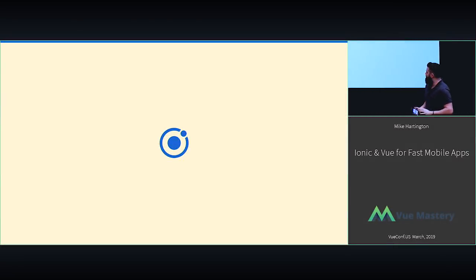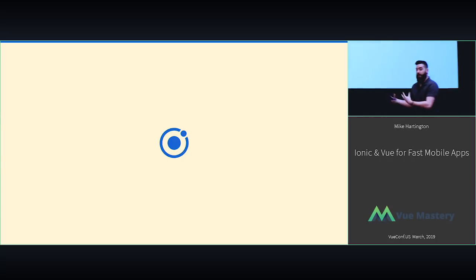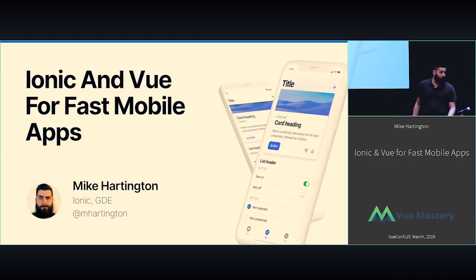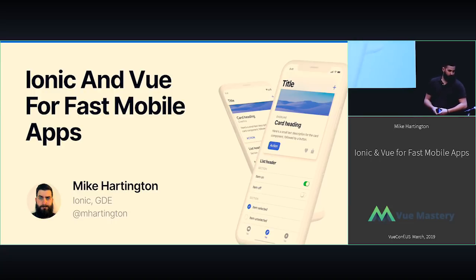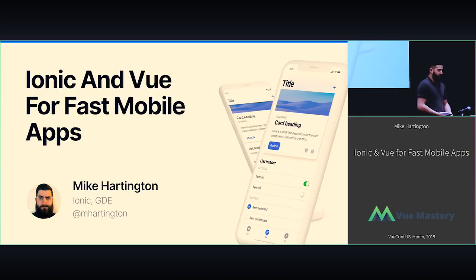I realize we're towards the end of the past couple of days of learning a lot of heavy technical stuff, so I thought we'd start off by going over the grain structure of the American white oak tree — I'm not going to do that. We're going to talk about building mobile apps with Ionic and Vue. I'm Mike Gardington. You can find me on Twitter — you will see so many pictures of my cats. The internet runs on cat.